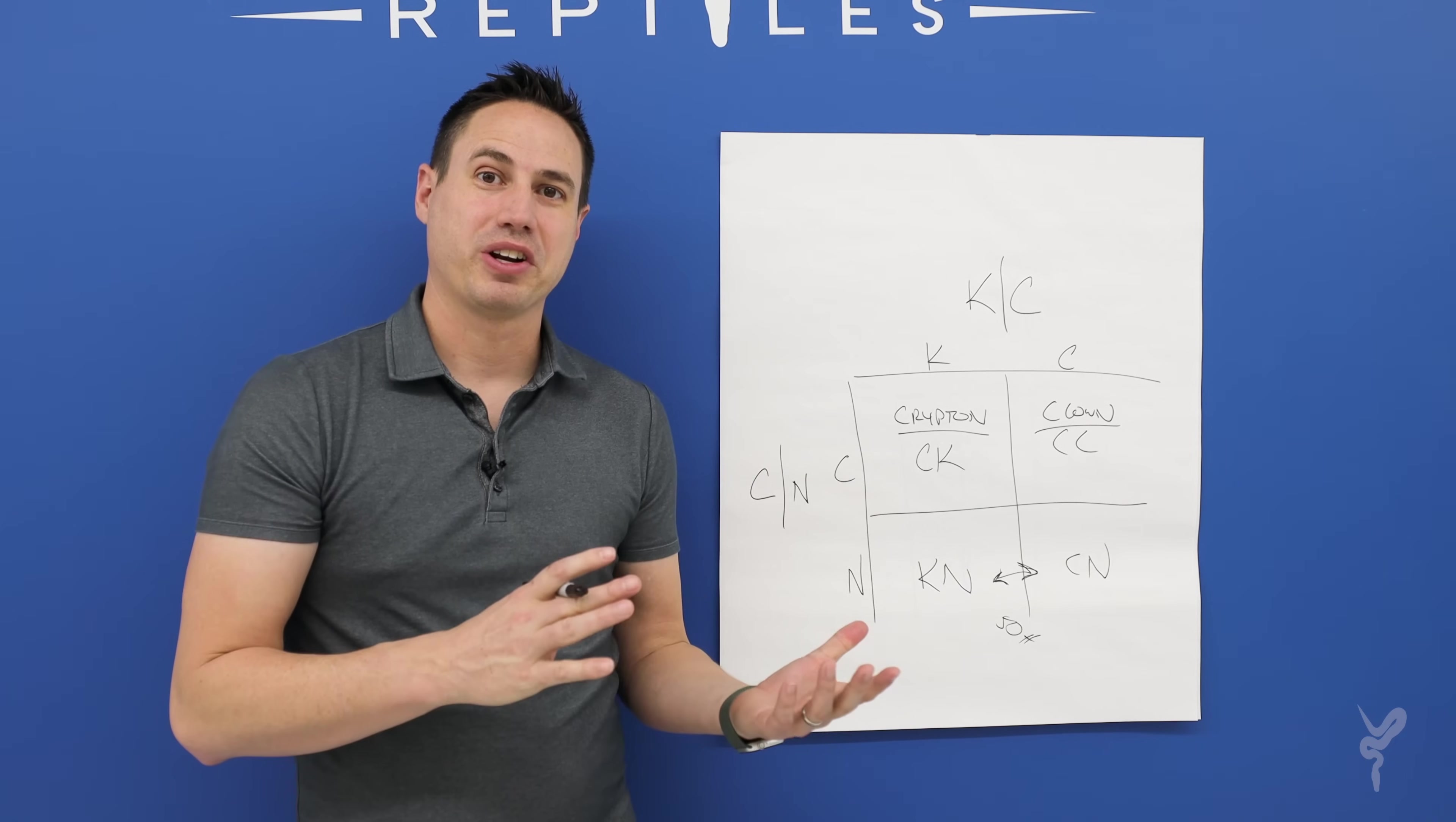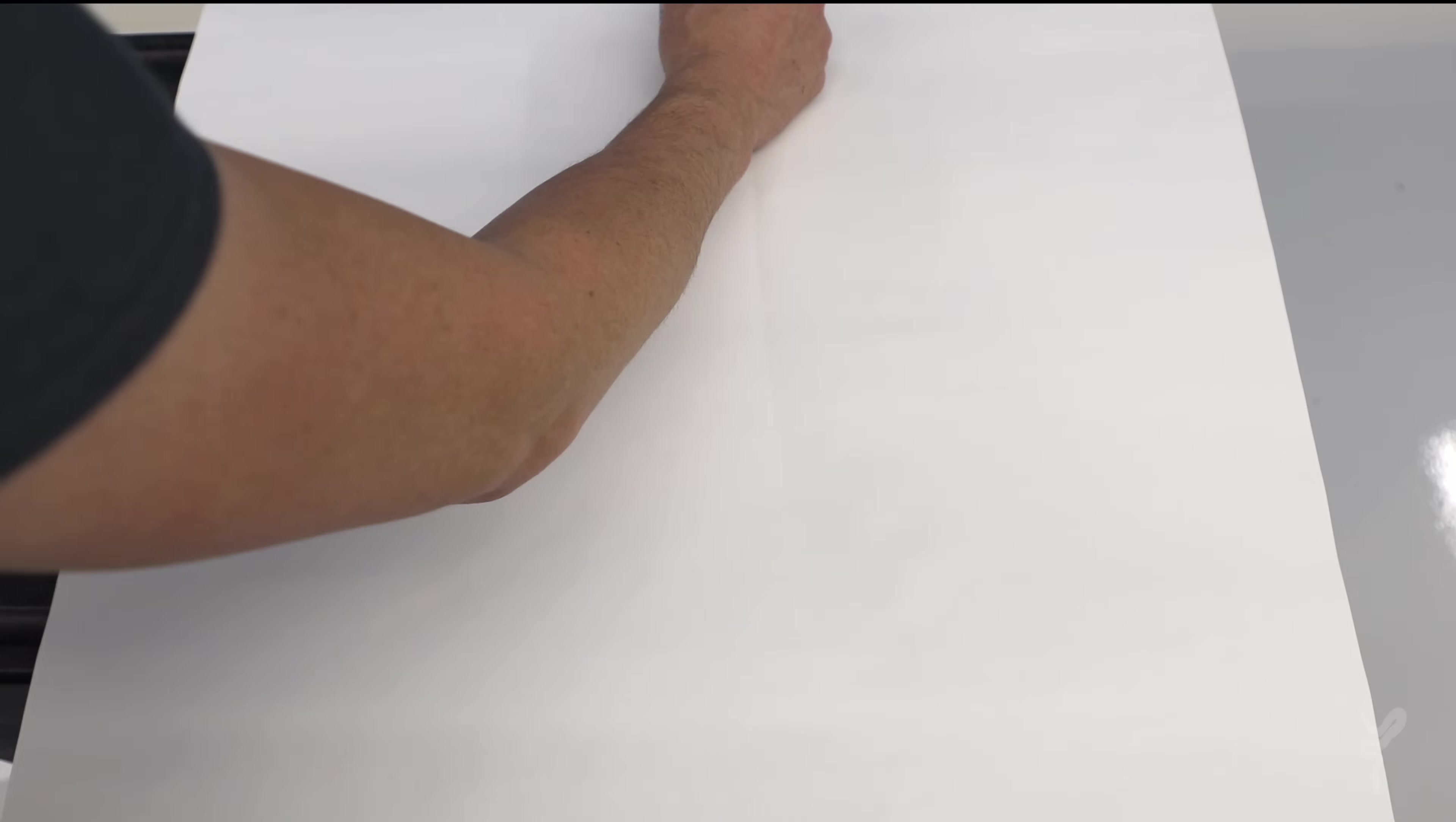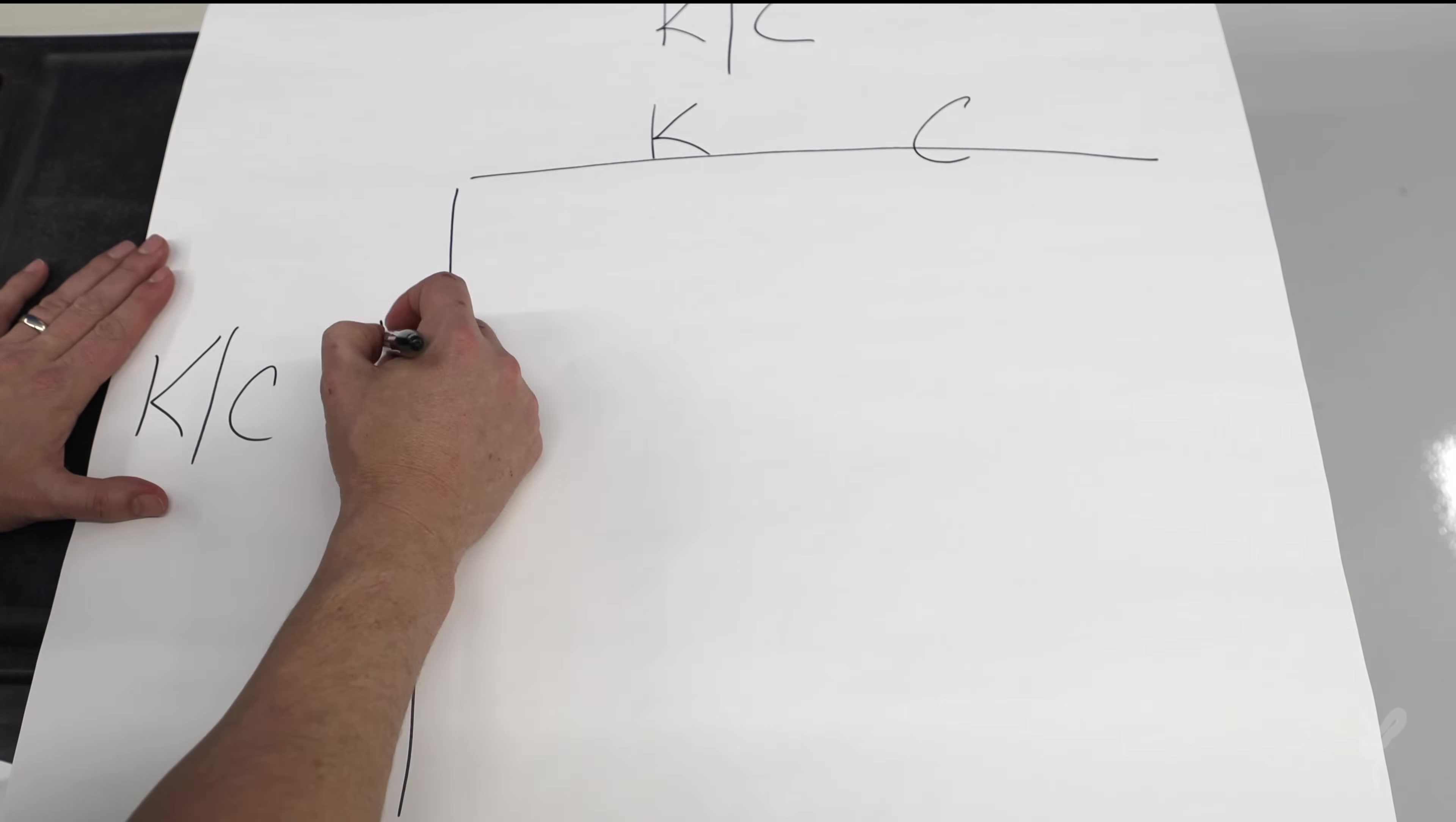So the last pairing we're going to look at is actually the most interesting. It has the most kind of weirdness going on, and this will be looking at a crypton to a crypton. It seems pretty simple, but in reality the results are highly complicated. So you're doing a crypton, which is a het cryptic, het clown, to a crypton, het cryptic, het clown.